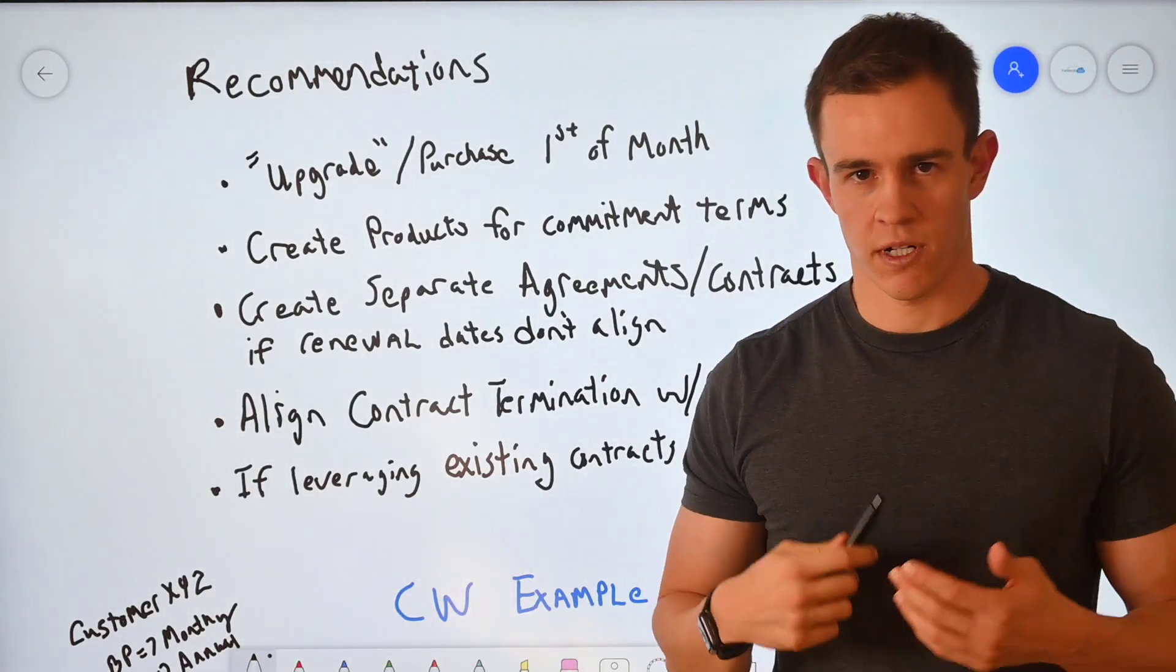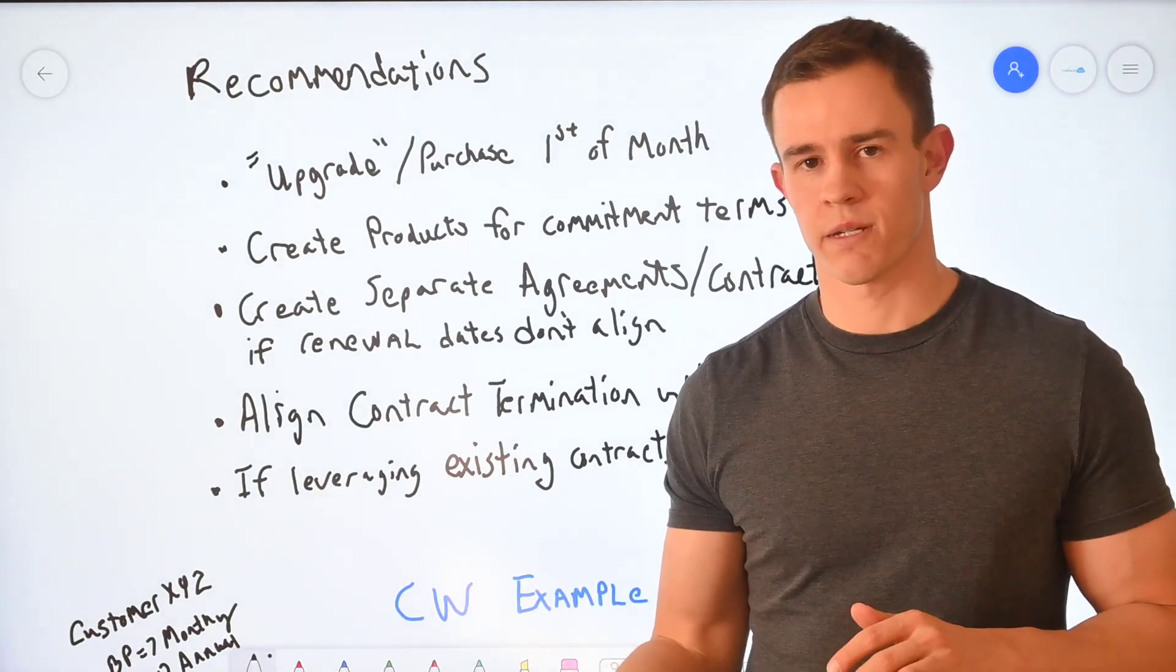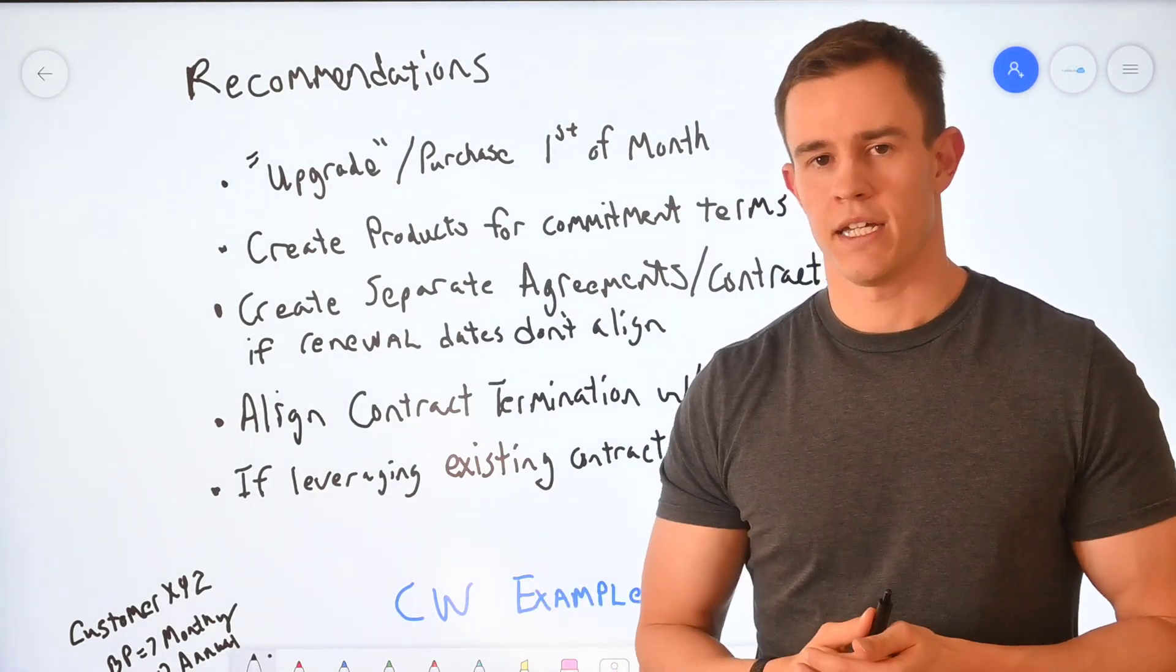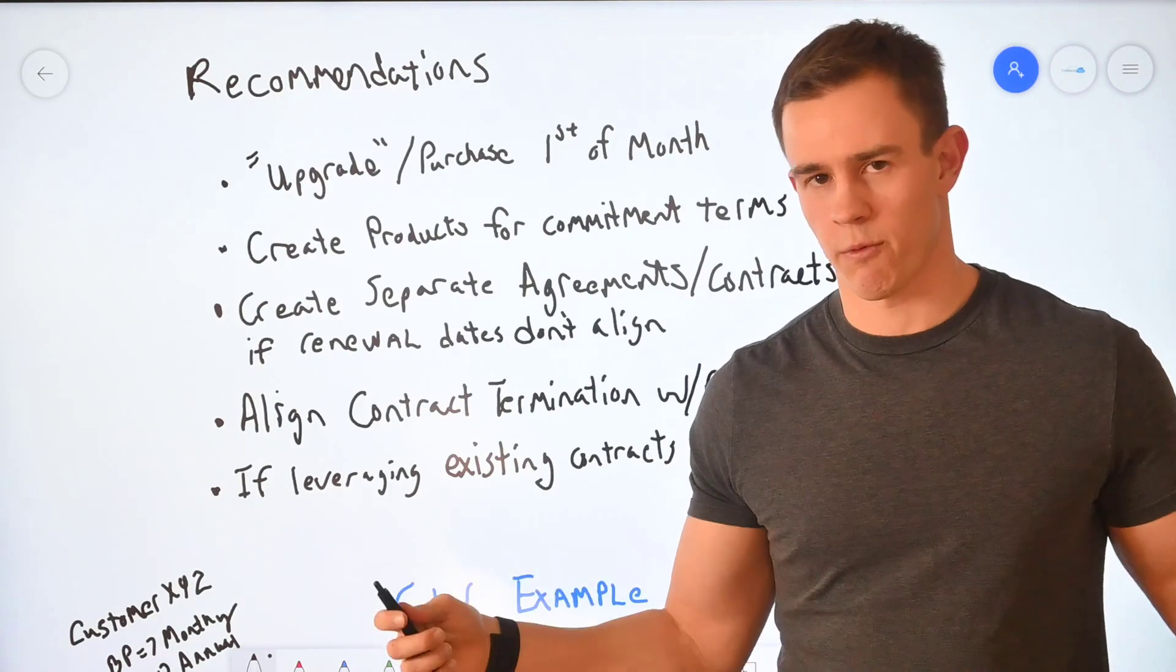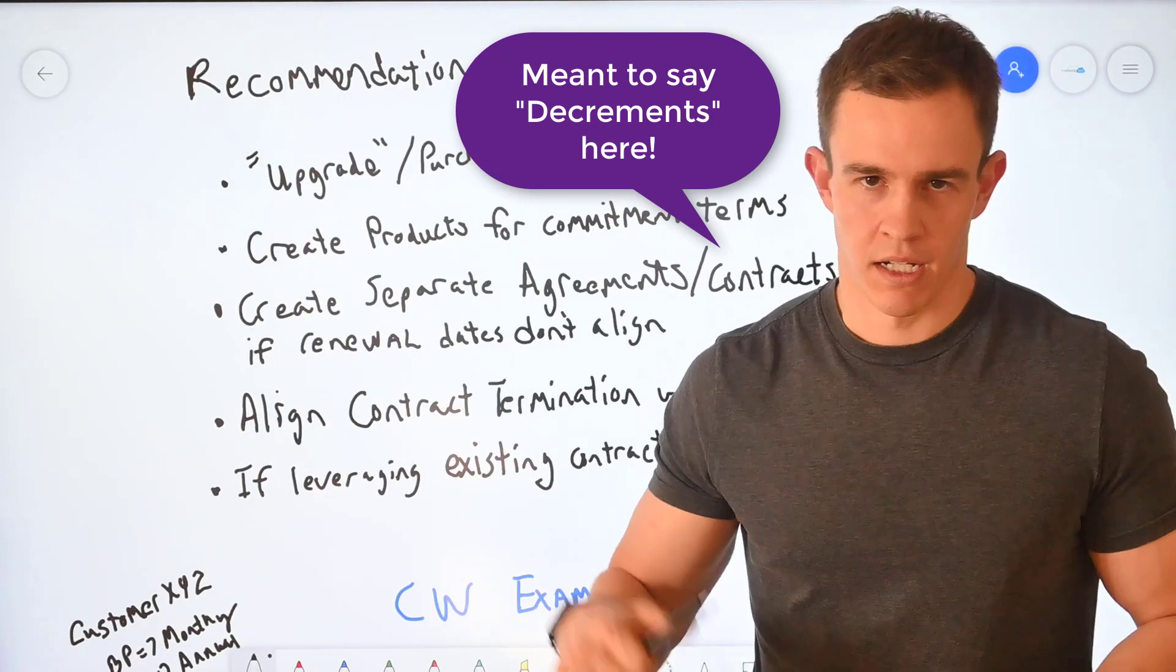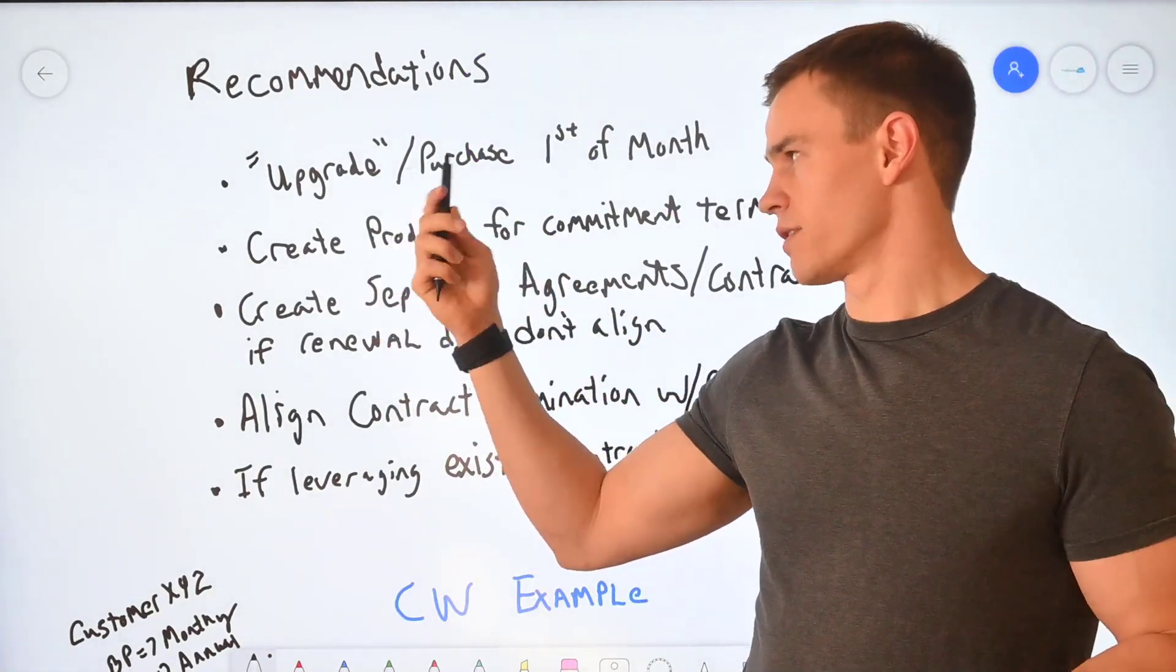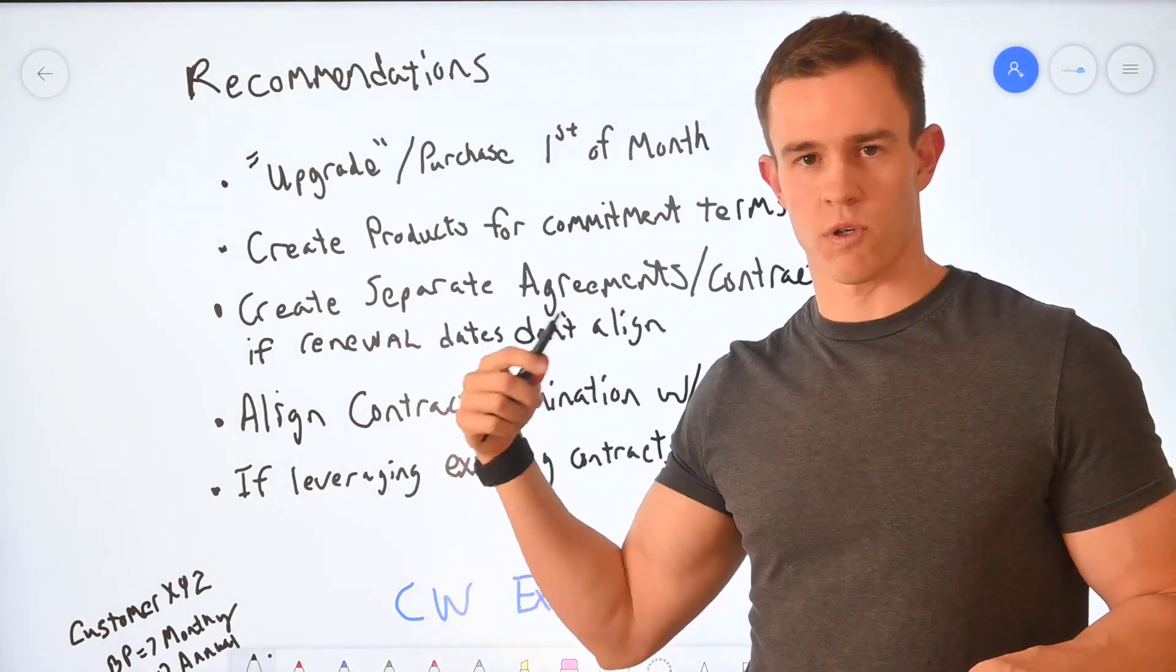But these are some of the recommendations that I would go with. High-level one, upgrade or purchase first of the month. Again, try to stick with that. If it was me, I would try to do this for all my clients or at least have one date of which they all have a very similar renewal if you can. And that is essentially to reduce your operational complexity with the increments and the time of which you can increment.